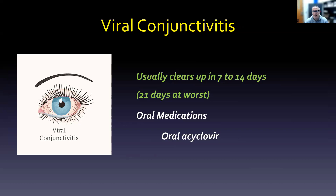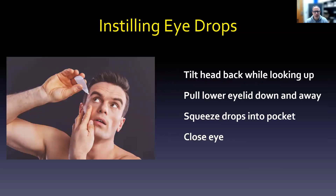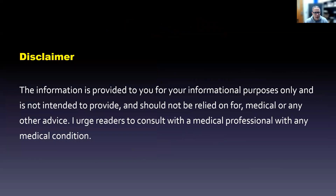Let's talk about actually instilling the drop itself. You want to tilt the head back while looking up — that's the first thing, and it's kind of a natural motion. Then you're going to pull the lower eyelid down and away, and squeeze drops into that pocket. Then — and this is key — you'll close the eye to get those drops in there. So four steps: tilt your head back while looking up, pull the lower eyelid down and away, squeeze the drops into the pocket, and then close the eye. This information is informational only; if you have a medical condition, contact a medical professional.